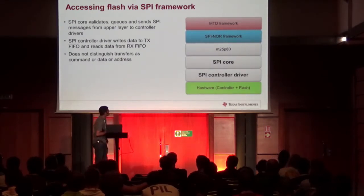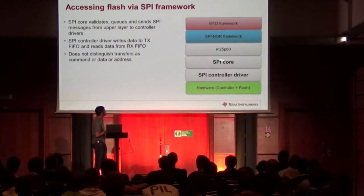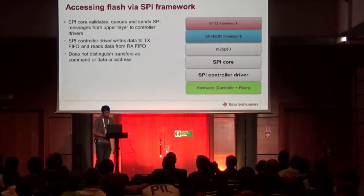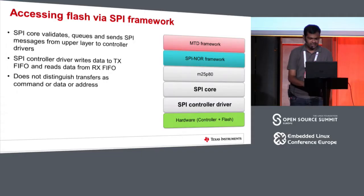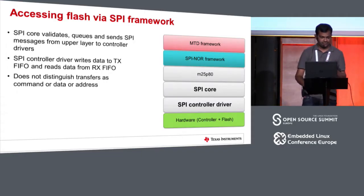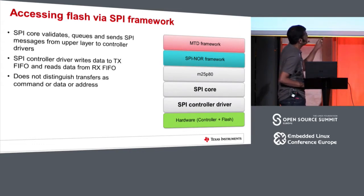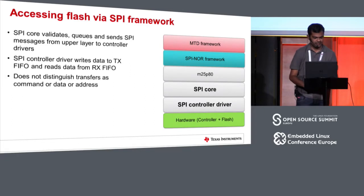The SPI core validates, queues, and sends the SPI messages from the upper layer to the controller drivers. The SPI controller driver writes data to the TX and RX FIFO, and data received via the RX FIFO is sent along the same path back to the SPI NOR and MTD framework.